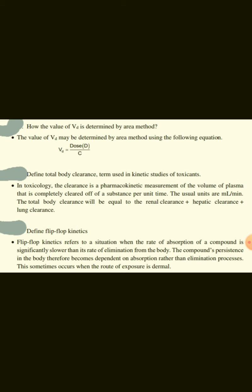How is the value of VD determined by the area method? VD, the volume of distribution, is determined by the area method using the formula: VD equals dose divided by concentration.